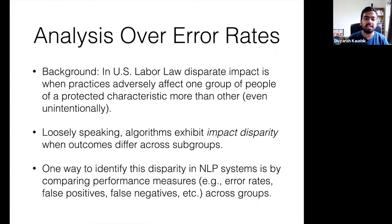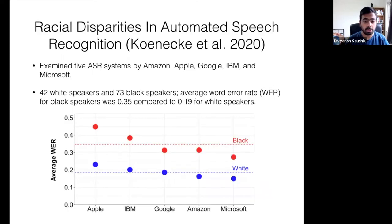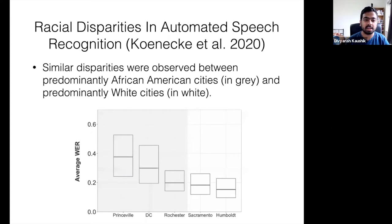The inspiration comes from US labor law, which defines disparate impact as practices in employment, housing, and other areas that adversely affect one group of people of a protected characteristic more than another, even if unintentionally. Loosely speaking, algorithms exhibit impact disparity when outcomes differ across subgroups. One way to identify this disparity in NLP systems is by comparing performance measures such as error rates, false positives, and false negatives across groups. In one paper, the authors looked at ASR systems from five companies — Amazon, Apple, Google, IBM, and Microsoft — and found that all five systems performed significantly worse for Black speakers than for white speakers. They also found that similar disparities are present when you deploy them in predominantly African American cities versus predominantly white cities.